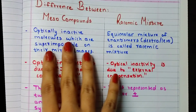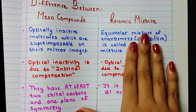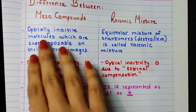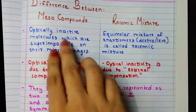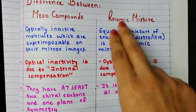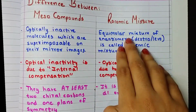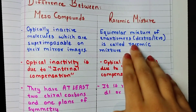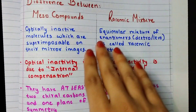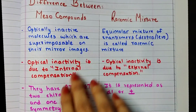The first point: both meso compounds and racemic mixtures are optically inactive. Meso compounds are optically inactive molecules which are superimposable on their mirror images. Racemic mixtures contain both plus and minus forms — that is, an equimolar mixture of enantiomers, 50% dextro and 50% levo — and that is called the racemic mixture.